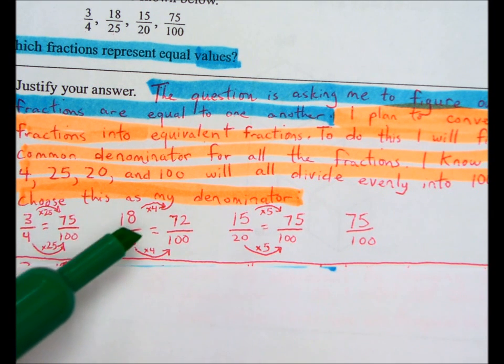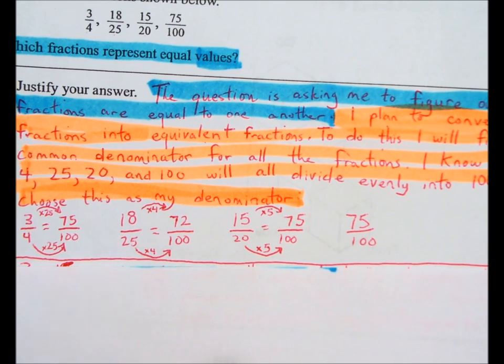The only one that's not equivalent, therefore, is 18-25ths, which is 72 over 100.